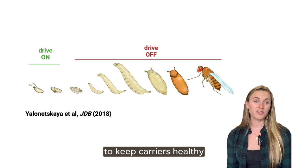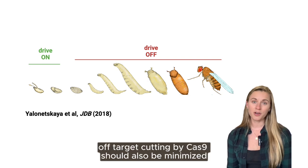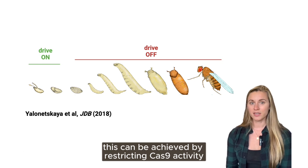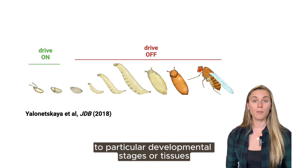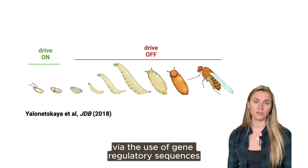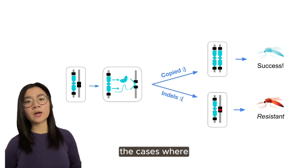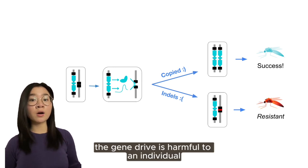So it's critical to ensure that the gene drive is minimally disruptive to the organism's function. To keep carriers healthy, off-target cutting by Cas9 should also be minimized. This can be achieved by restricting Cas9's activity to particular developmental stages or tissues via the use of gene regulatory sequences, and by careful testing of the RNA used to guide Cas9.